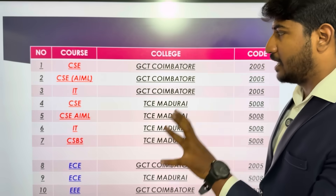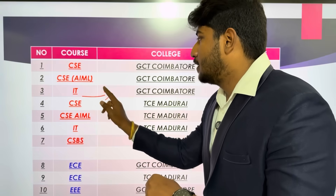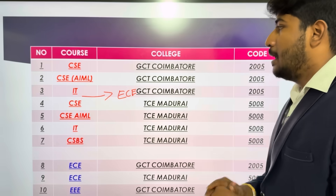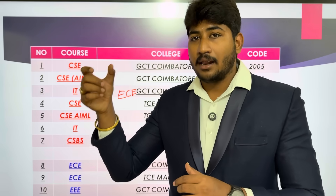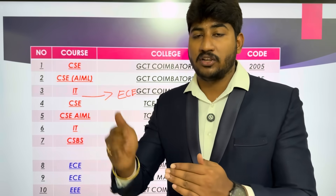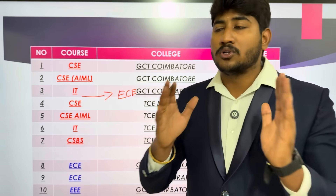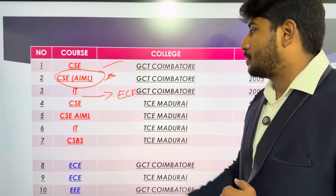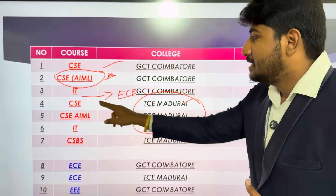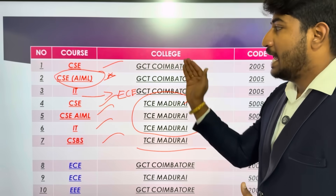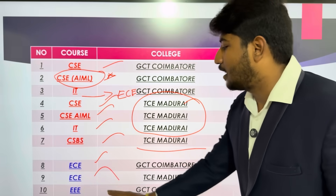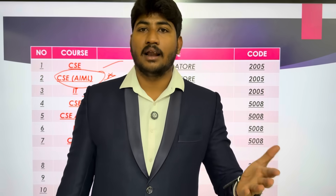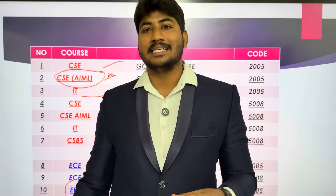If you are interested, you can add ECE to the CSIT. If you want to add mechanical — mechanical and automation, automobile and production — you can add a set of courses. In GCE, there is CSE and AEML course. We have a star in the IT department. That's why we have CS, CSE, AEML, IT, and CSBS. We also have an ECE department. This is the best method of choice filling we have seen so far.